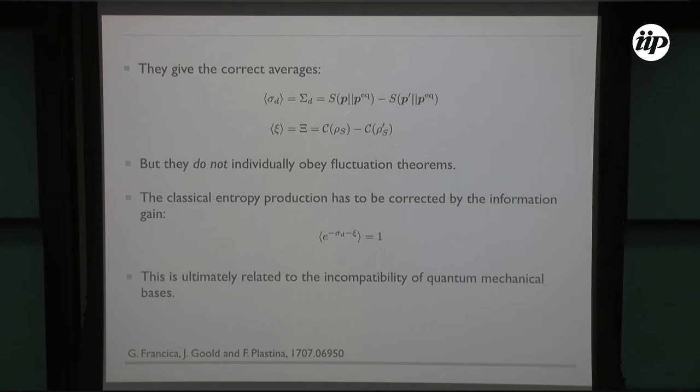These guys work in the sense that if you average them, you get the formulas that we wrote before for the average entropy production due to the diagonal terms and due to coherences. However, they do not satisfy a fluctuation theorem, which I find quite interesting. There's a paper by John which appeared around the same time as ours which discusses a very similar formulation but for unitary driving dynamics and mechanical driving in terms of work. In their case, they satisfy independent fluctuation theorems.